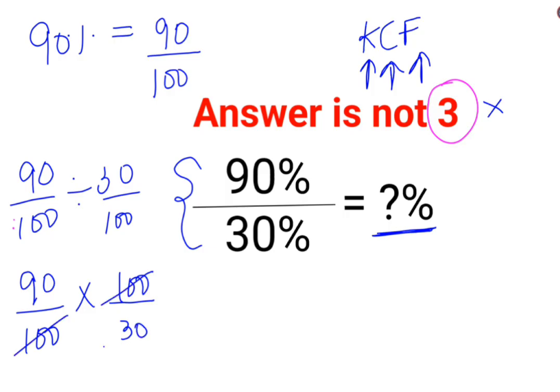So this and this gets cancelled - this is 1 and this is 3. Now you will wonder that the answer is coming out to be 3. But I'm still saying the answer is not 3. The answer cannot be 3 because they are looking for the answer in terms of percentage, not just the number. If they are looking for the answer in percentage, you need to convert this number into its percentage form.